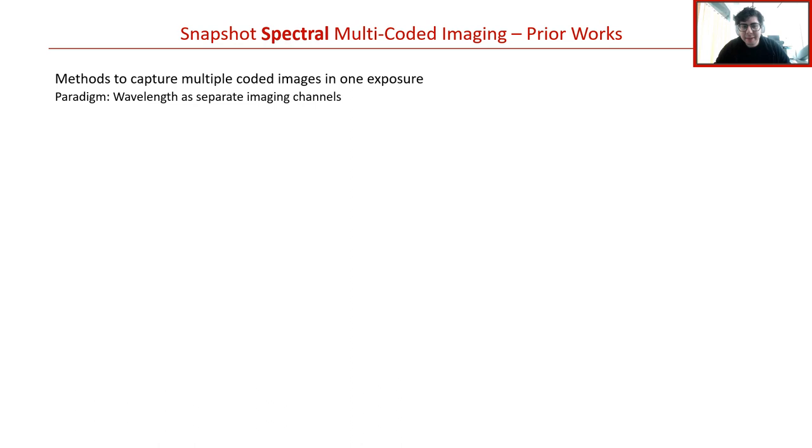Now these previous methods all captured multiple images sequentially over time. However, there's substantial interest in designing an architecture that can instead obtain the set of multiple images in a single exposure, in other words, a single snapshot from the camera. The benefit is that we could then apply these algorithms to scenes that are not static and extract information with higher effective frame rates. One way to do this is with the general paradigm of using wavelengths as separate imaging channels. In this work, I classify imaging systems that use this idea as snapshot spectral multi-coded imaging systems.